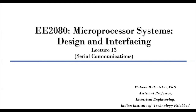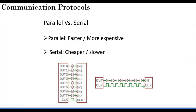This topic is slightly different and more in line with GPIO, but now we talk about multi-bit communication. As the name suggests, it is serial in nature. When we think about communication protocols, there are two options: parallel and serial.